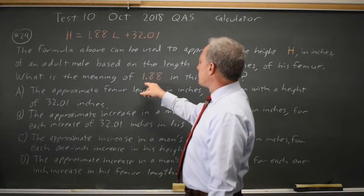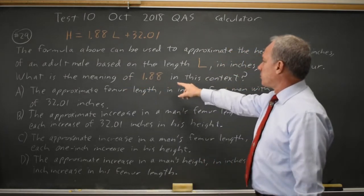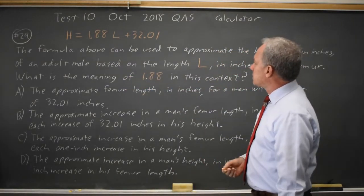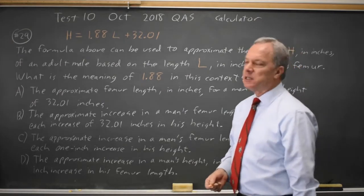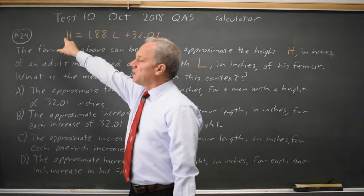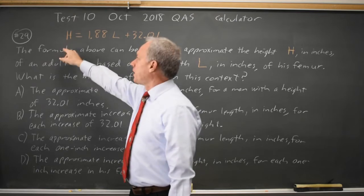In this case, they're asking for the meaning of the slope. What is the meaning of 1.88 in this context where L is the femur length and H is the height? And this means that when L goes up by 1, H goes up by the slope, 1.88.